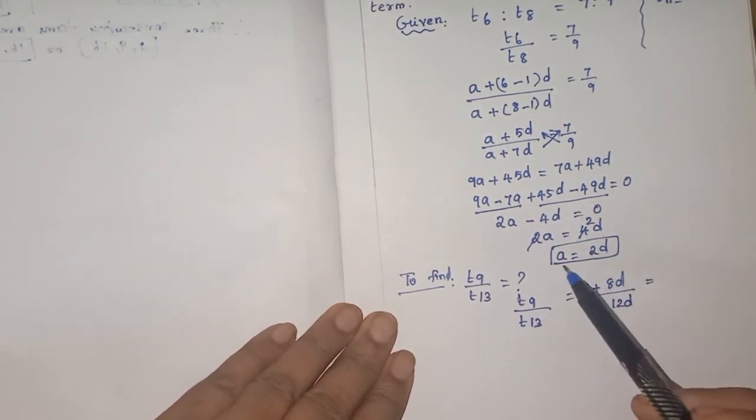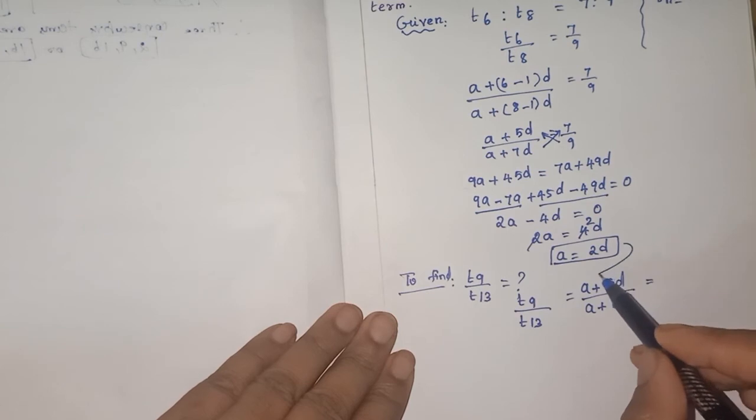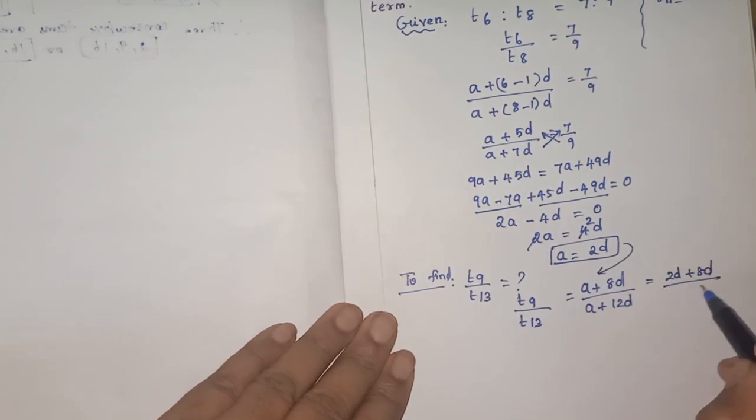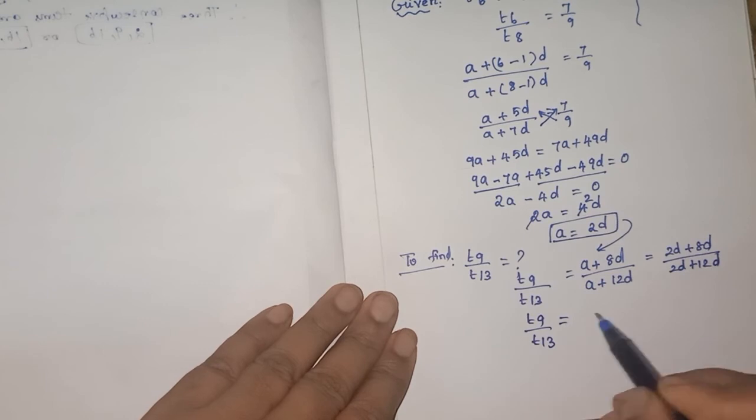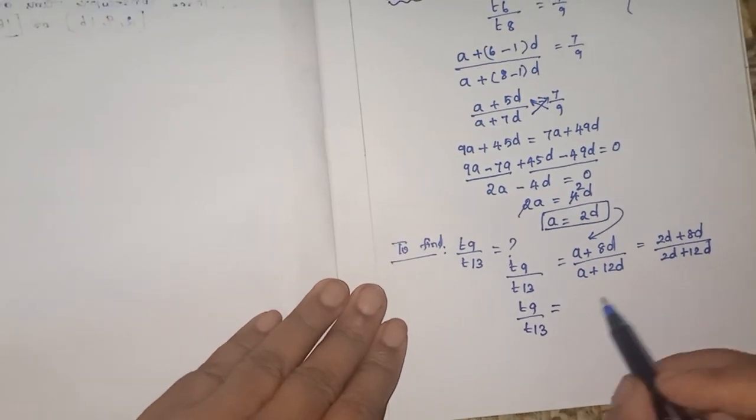Same AP only. They are saying the conclusion from the given hint, A is equal to 2D. So I am substituting A is equal to 2D here. Substituting A is equal to 2D. So 2D plus 8D by 2D plus 12D. So what will happen?